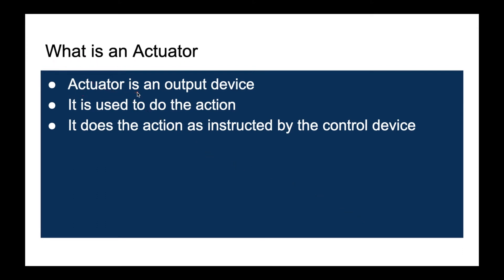An actuator is basically the output device in any electronic project. It is something that is used to perform the action. For example, in the street light project that I have already explained, the actuator is nothing but the light bulb. Whenever the light is going down in an area, the street light has to switch on. In that case, the actuator is the street light — it does the action as instructed by the control device.